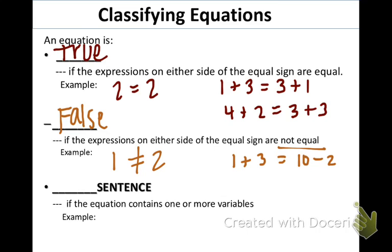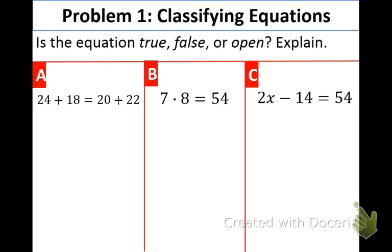There's another vocab word that we want to know. It's called open sentence. So, we have an open sentence if the equation that we're dealing with involves one or more variables. Remember, a variable is just a letter. So write that down if you forgot. An example of this would be x plus 1 equals 4. As you can see, the variable x is involved.